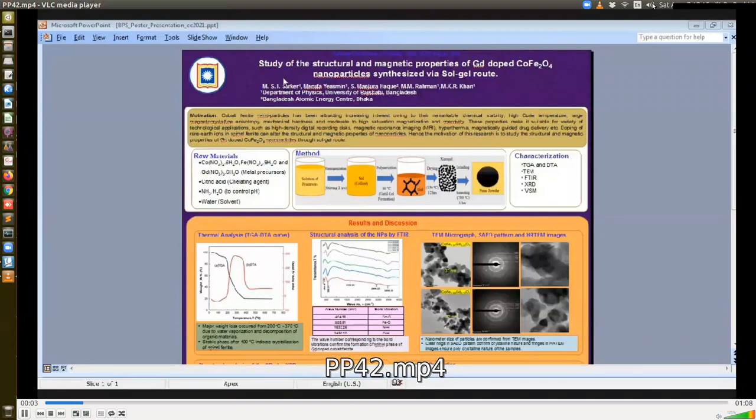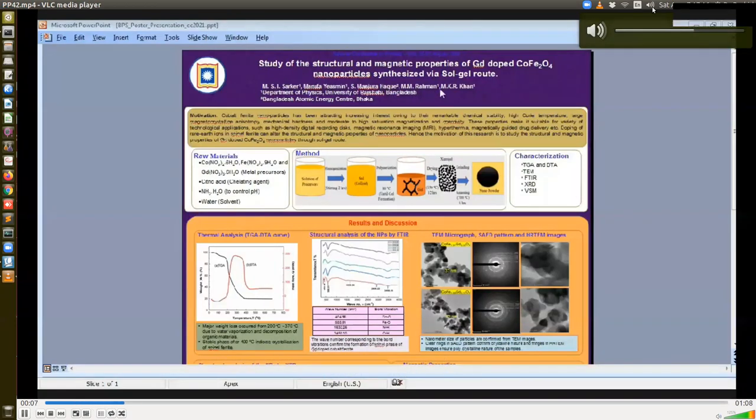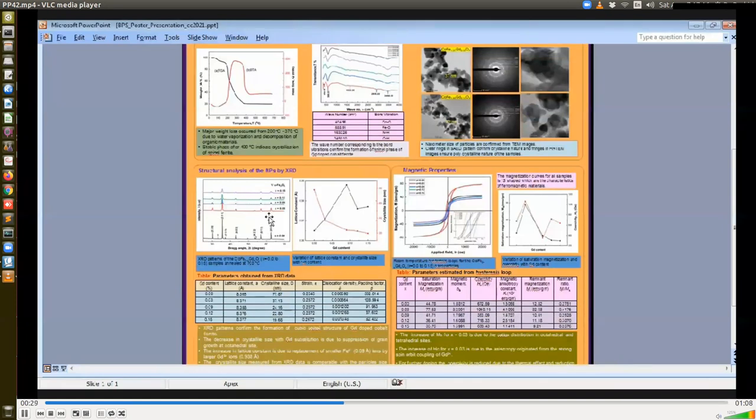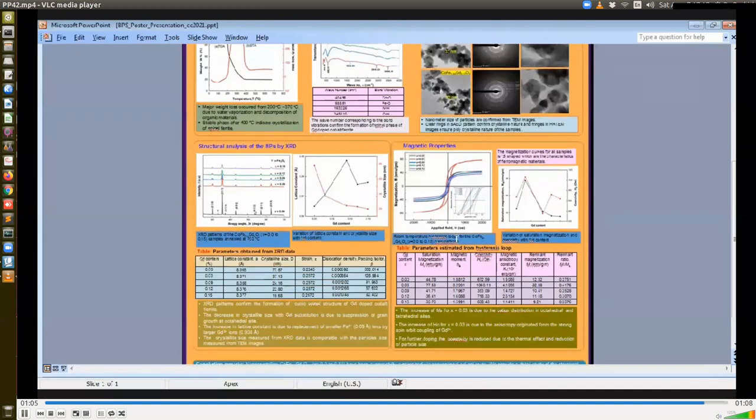Welcome everybody. The title of my topic is the study of the structural and magnetic properties of erbium and cobalt doped nanoparticles. The result shows this is because of thermal effect and reduction of particle size. Thank you very much.